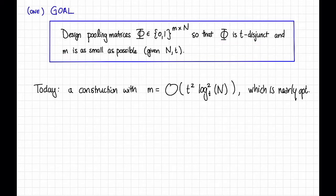Today, what we're going to see is a construction with m equals O of t squared log base t squared of n, which, as we saw in the previous video, is nearly optimal.